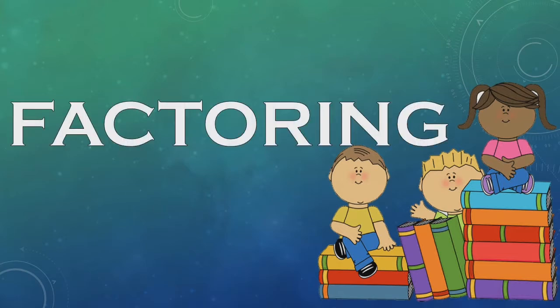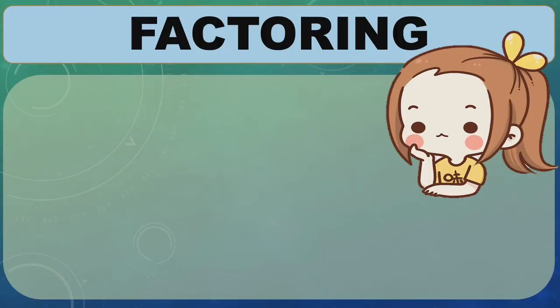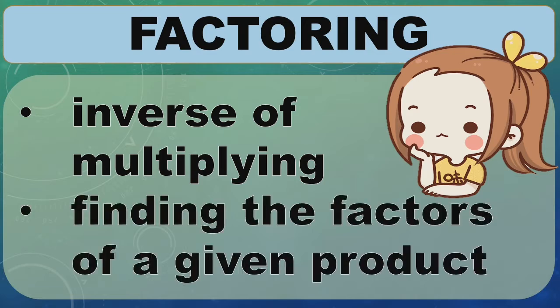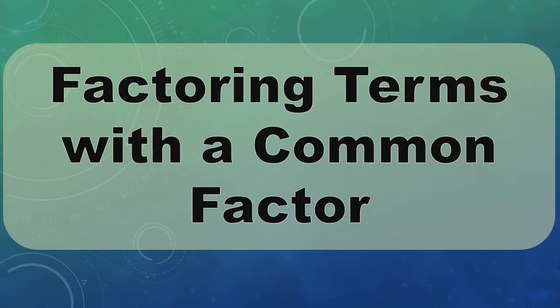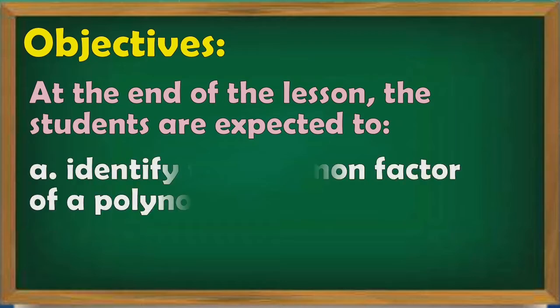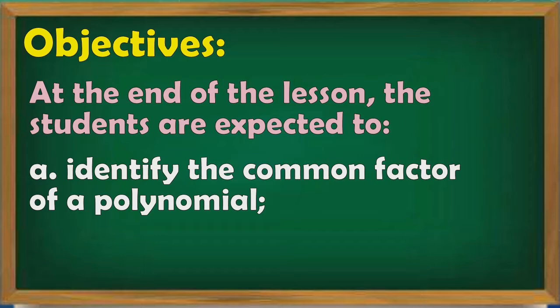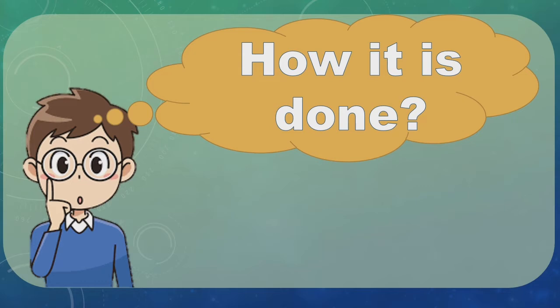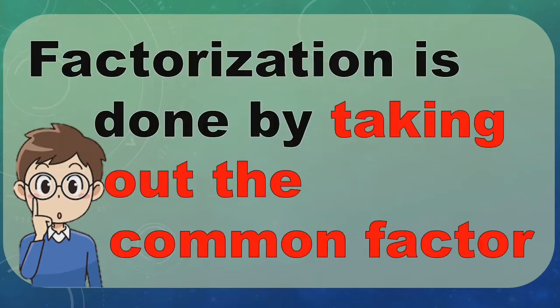Today, we will have factoring. Factoring is an inverse of multiplying. It is finding the factors of a given product. First is factoring terms with a common factor. How is it done? Factorization is done by taking out the common factor.